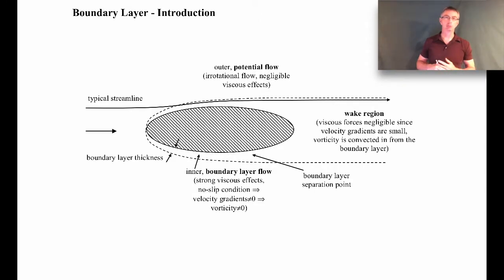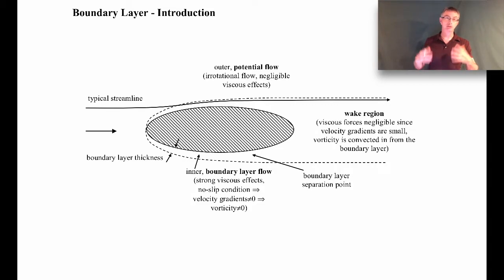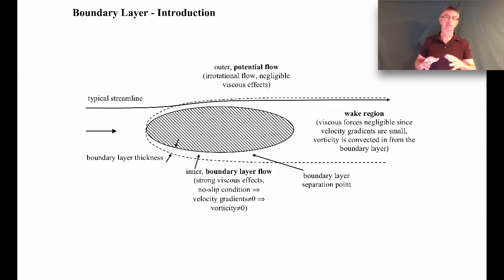Prior to that, people didn't understand how viscous stresses were generated in a flow field in a good analytical way. Prandtl developed the idea and simplified the Navier-Stokes equations to a form known as the boundary layer equations. Some of Prandtl's graduate students then solved a case of those equations for laminar boundary flow — we call that the Blasius solution for a laminar boundary layer, which we'll cover in a couple of videos.